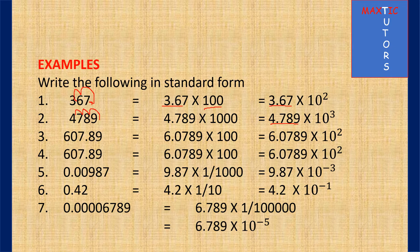The same goes for 607.89. How will you get a number less than 10 here? It is when you have 6.0789. And how many times do you shift it? You shifted it 2 times backward, that's times 100, and 100 is 10 to the power 2. So all these are the ways in which you can express numbers in standard form.